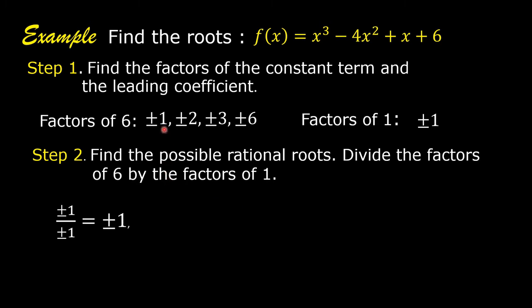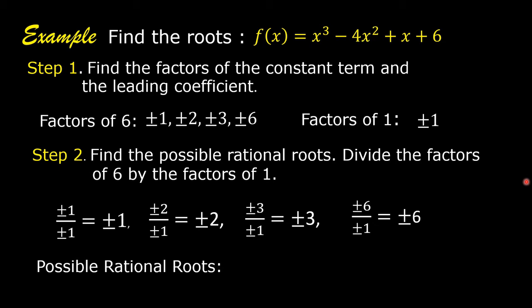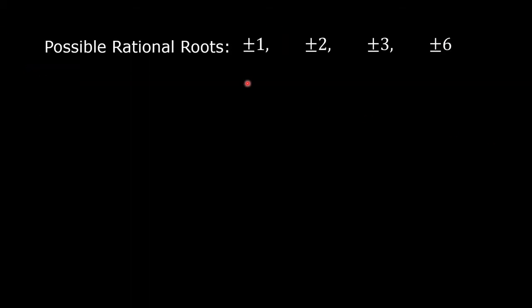Positive and negative 1 divided by positive and negative 1 equals positive and negative 1. Positive and negative 2 divided by positive and negative 1 equals positive and negative 2. Positive and negative 3 divided by positive and negative 1 equals positive and negative 3. And positive and negative 6 divided by positive and negative 1 equals positive and negative 6. The possible rational roots are ±1, ±2, ±3, and ±6.